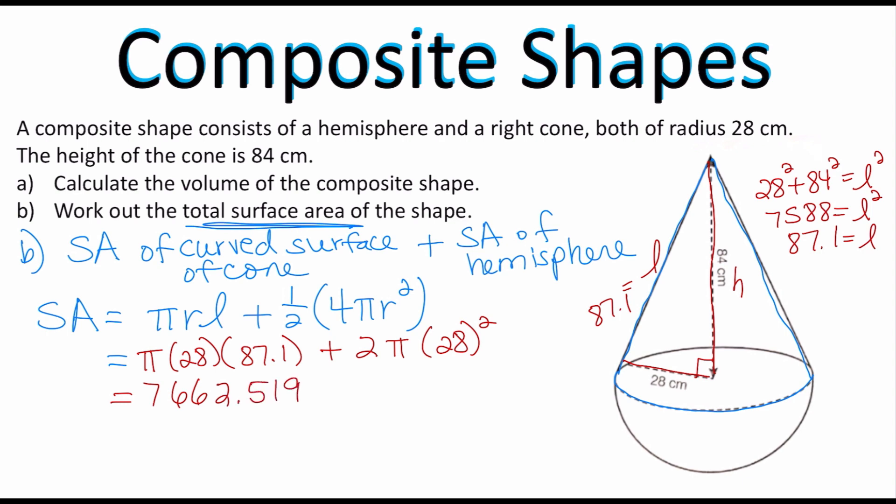Plus now let's go ahead and multiply 2 times π times 28² and we get 4,926.01728. Let's add those two numbers together for a grand total of 12,588.54 square centimeters and it all depends on what you need to round to.